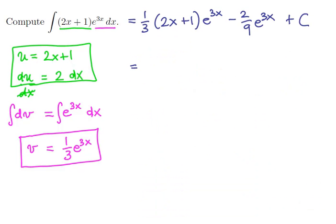Now notice that there's an e to the 3x in both of these terms. So it can be pulled out to the front. Also, given the choice of 1 third and 1 ninth, if we pull out a 1 ninth, we'll be able to introduce integers in everything that's left over. Notice that we're going to have a 3 left over for the first piece times the 2x plus 1. And we'll have a 2 left over in the second piece.